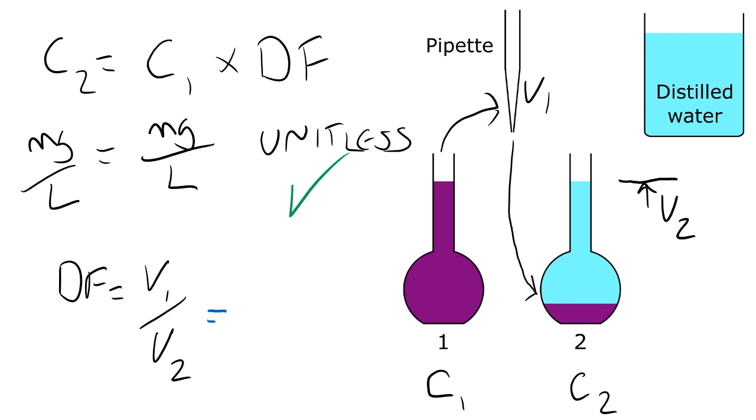Because here we have the ratio of two volumes, if those two volumes are measured in the same units, then the units will cancel and the dilution factor ends up being unitless.